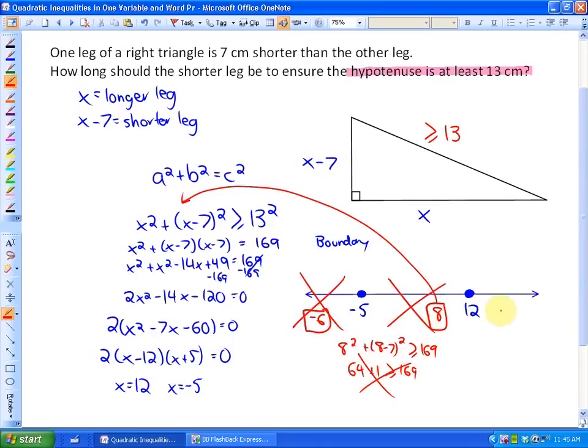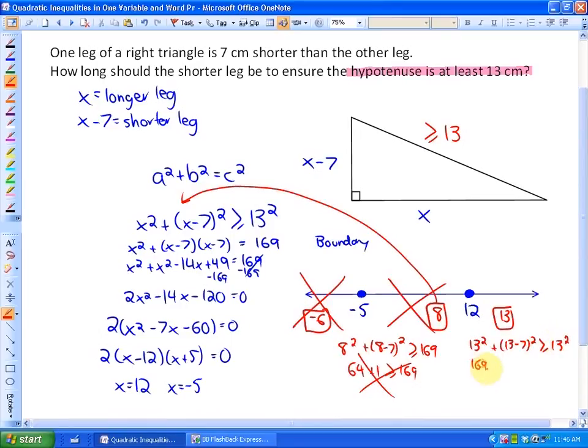Finally, let's test the number 13, and ask yourself, is 13 squared plus (13 minus 7) squared greater than or equal to 13 squared? Absolutely it will be. It will be 169 plus 36 greater than or equal to 169. Yes, so this is our solution here.